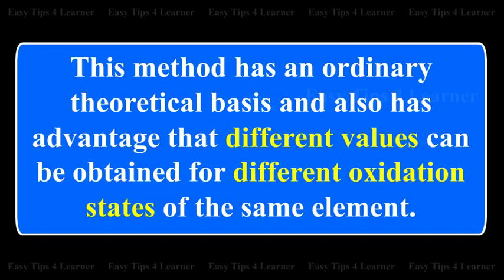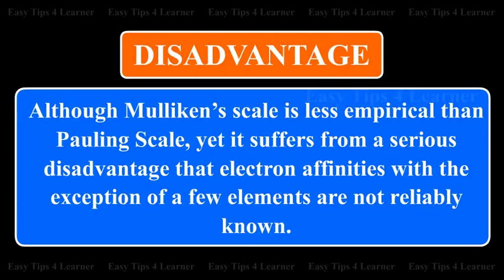This method has a sound theoretical basis and also has the advantage that different values can be obtained for different oxidation states of the same element. Disadvantage: Although the Mulliken scale is less empirical than the Pauling scale, yet it suffers from a serious disadvantage that electron affinities, with the exception of a few elements, are not reliably known.